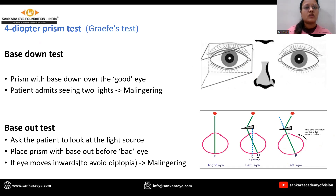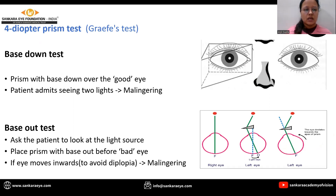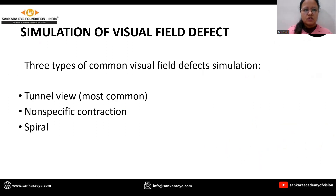The 4-diopter prism test, or base-down test: a prism is placed base-down over the good eye to induce monocular vertical diplopia. If the patient reports seeing two lights binocularly, they are concluded to be a malingerer. The base-out test: we ask the patient to look at a light source and place a prism base-out before the bad eye. If the eye moves inward to avoid diplopia, they are concluded to be a malingerer.